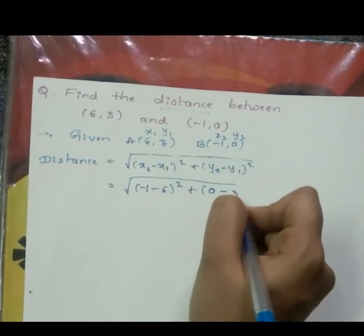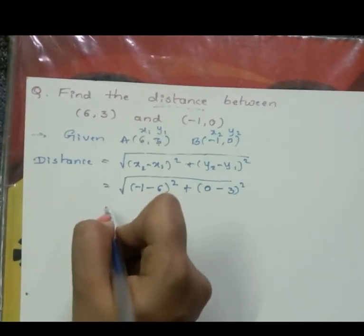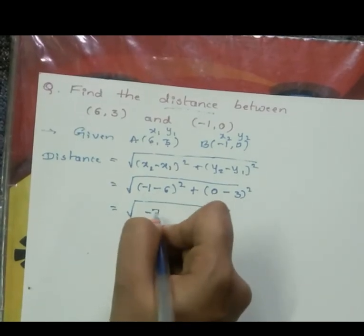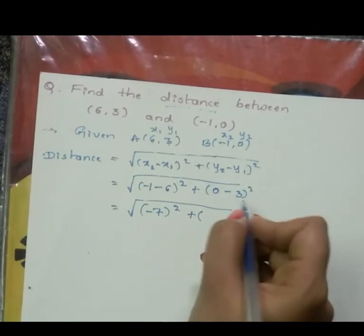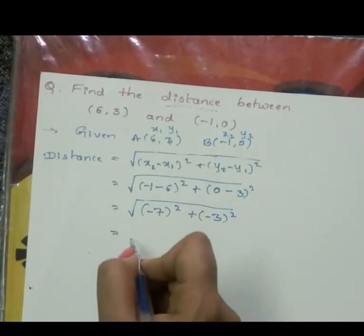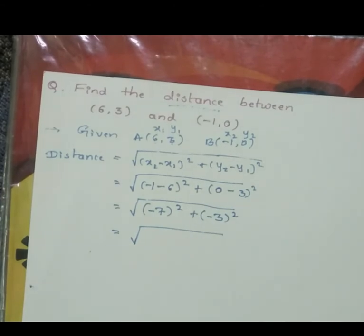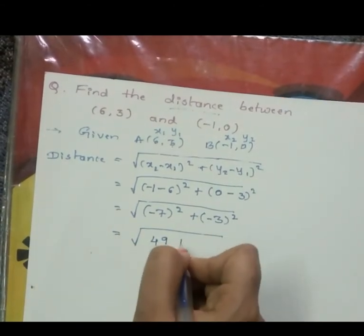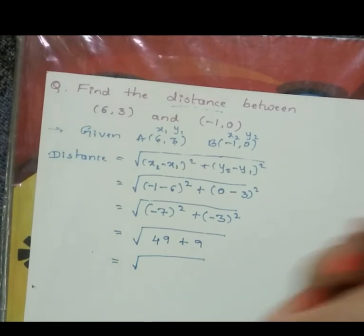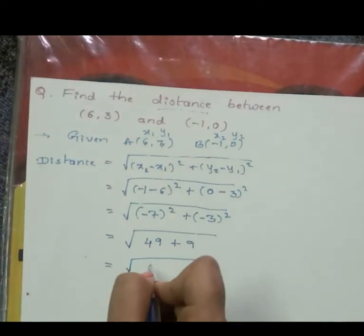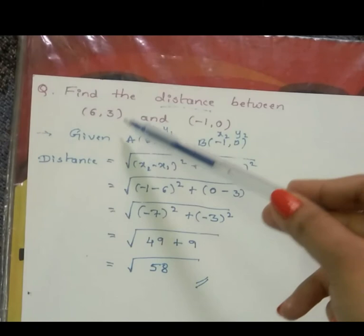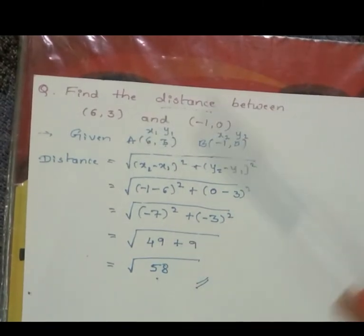Distance equals square root of (-1 minus 6) whole square plus (0 minus 3) whole square, which equals square root of (-7) squared plus (-3) squared, equals square root of 49 plus 9, equals square root of 58. So the distance between (6, 3) and (-1, 0) is √58.